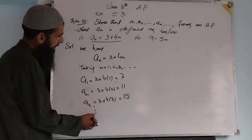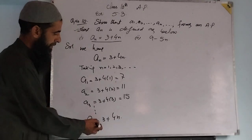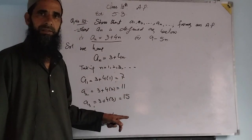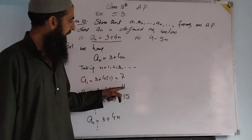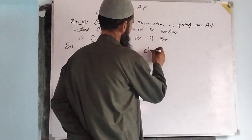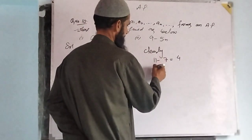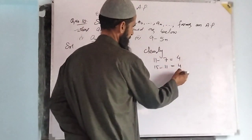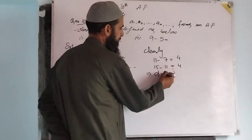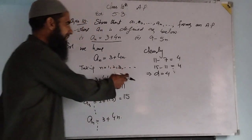We have n equal to 3 plus 4 times n, and so on. Clearly, when we see 7, 11, 15 and so on: 11 minus 7 is equal to 4, and 15 minus 11 is equal to 4, and so on. This implies the common difference d is equal to 4.